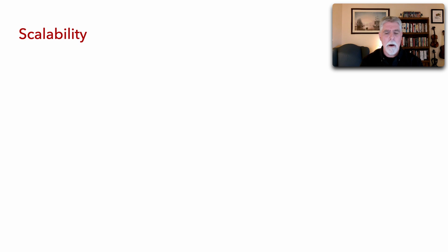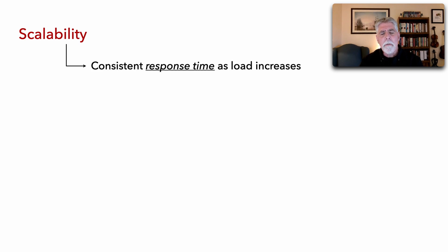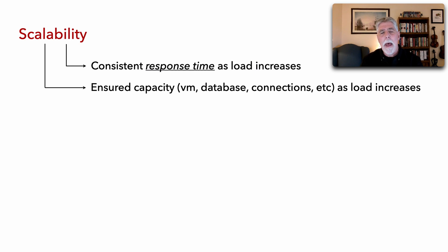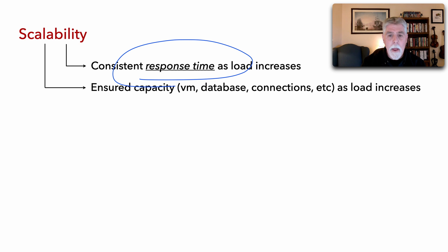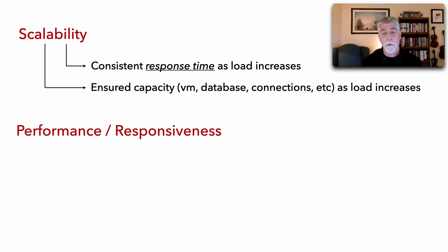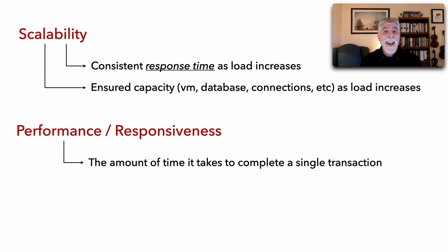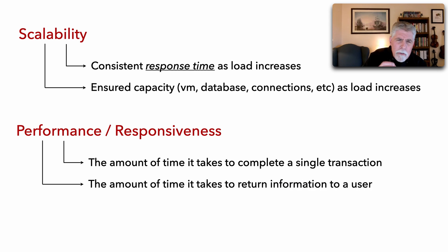If we look at scalability, some of the ways we can define it include: a consistent response time as load increases, and ensuring capacity in our virtual machines, our databases, our connection pools, and all that stuff as load increases. We do see a link between scalability and responsiveness and performance. If we define performance and responsiveness, we could say it's the amount of time it takes to complete a single transaction, or in terms of responsiveness, simply the amount of time it takes to return some information to the user.